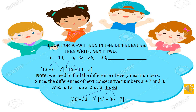The difference of 33 and 26 is 7, so the next difference should be 3. We guess the next number is 36: 36 minus 33 equals 3. Then the following difference should be 7, so the next number is 43: 43 minus 36 equals 7. Therefore, the completed number pattern is: 6, 13, 16, 23, 26, 33, 36, and 43.